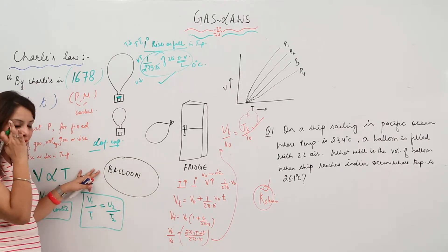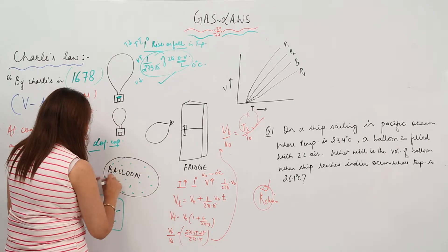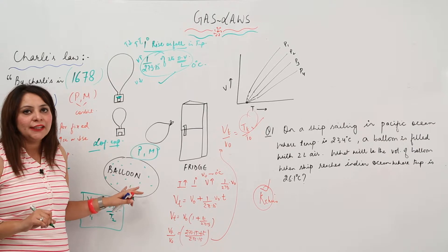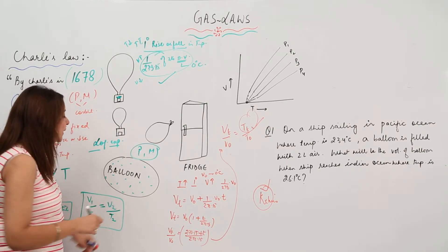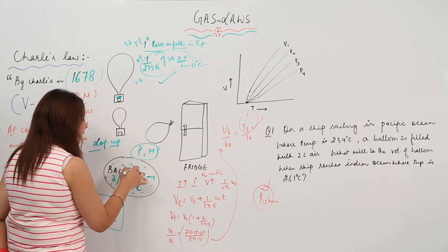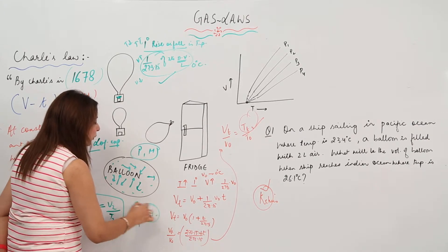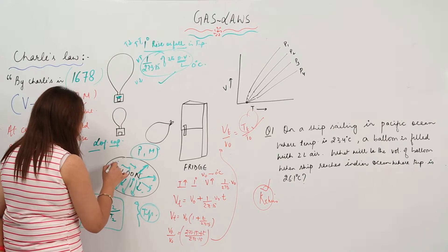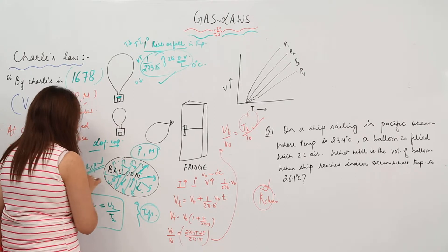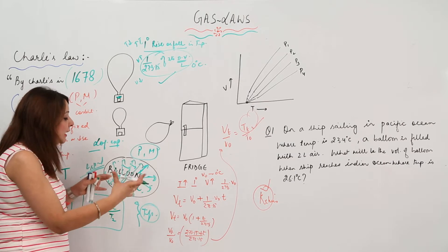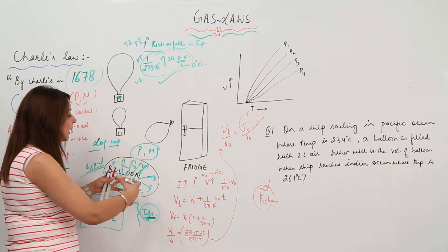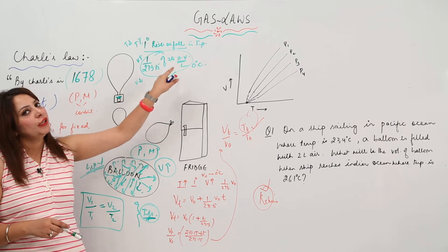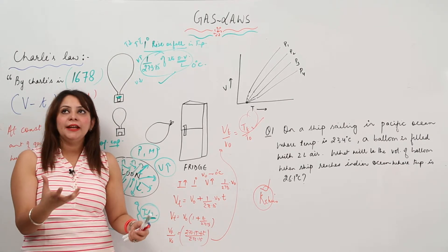Consider a balloon filled with air molecules occupying a certain volume at fixed pressure and fixed mass. The air molecules are moving because gases have high kinetic energy. When you provide heat from outside, the molecules gain thermal energy and start moving faster. This causes the balloon to expand. The volume increase is 1/273.15 of the original volume at 0°C for every one degree rise.